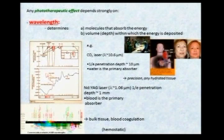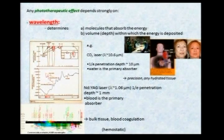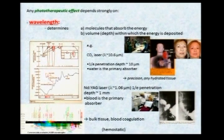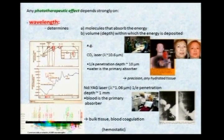At the other end of the scale, coming down a factor of 10 in wavelength, the 1/e penetration is more like millimeters with blood as the primary absorber, allowing bulk tissue and blood coagulation — it's hemostatic. If you tried to cut through a vascularized lesion with a CO2 laser you'd have blood spouting, but with a Nd:YAG laser, absorbed by blood, you coagulate as you cut. This is used in dentistry and, for example, to open an esophagus obstructed by tumor — going down with an optical fiber through an endoscope and burning your way through.